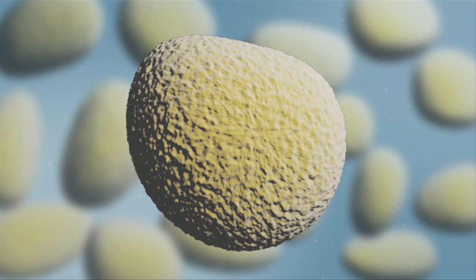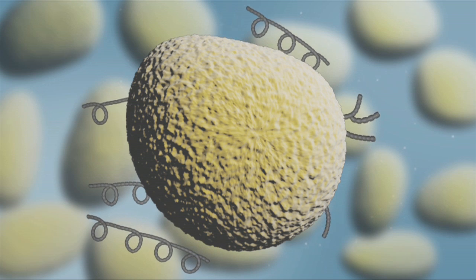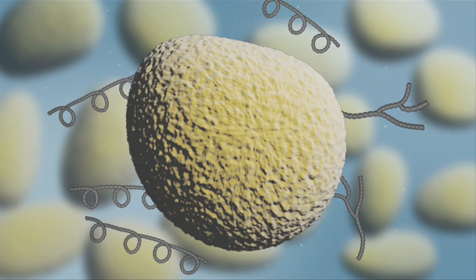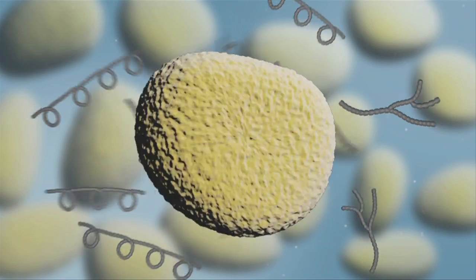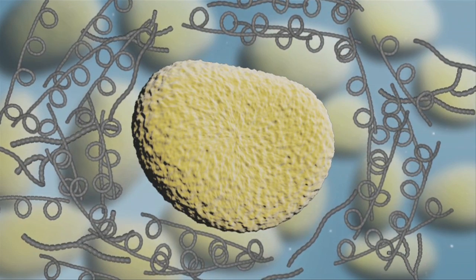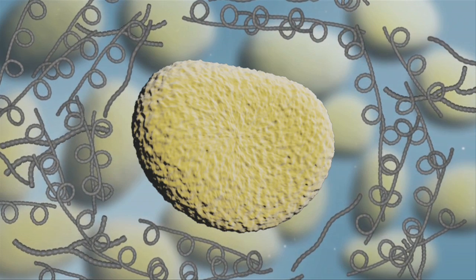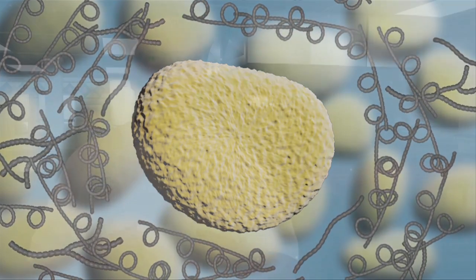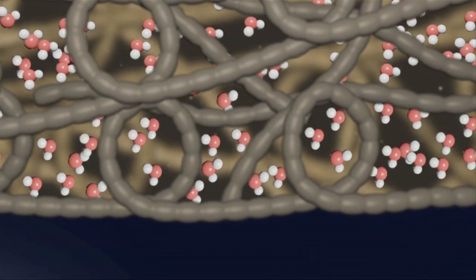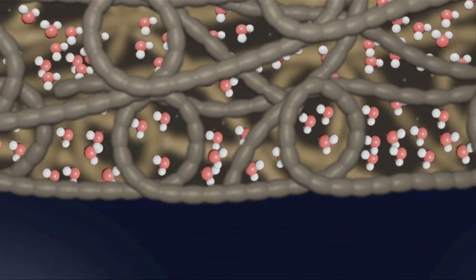Some of the linear amylose chains can leach out of the swollen granule into the solution. When shear force is applied to the swollen granules, they rupture, spilling their contents into the solution. It is both the granule swelling and the leaking of amylose that thickens the solution of gelatinized starch. The swollen granules, granule fragments, and amylose leached out form a tangled meshwork that binds to and slows the movement of water molecules, thickening the solution.